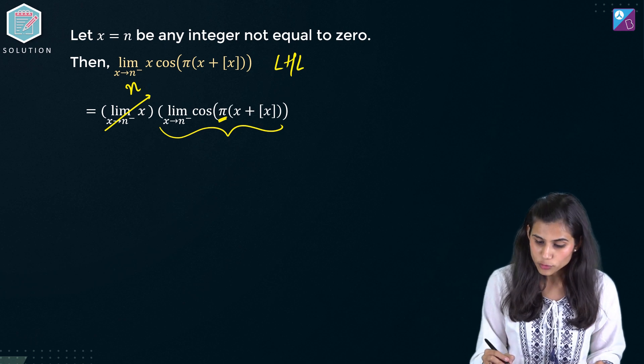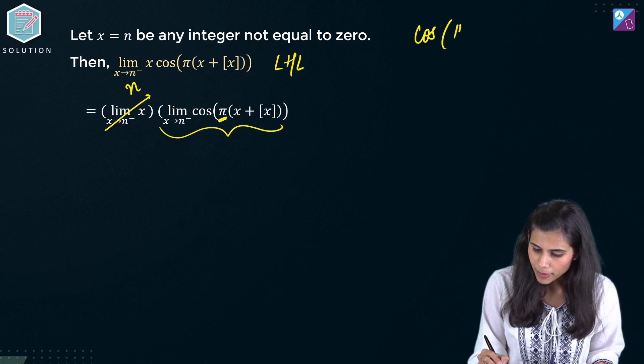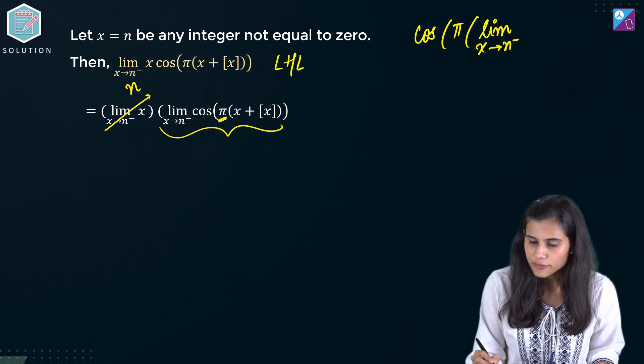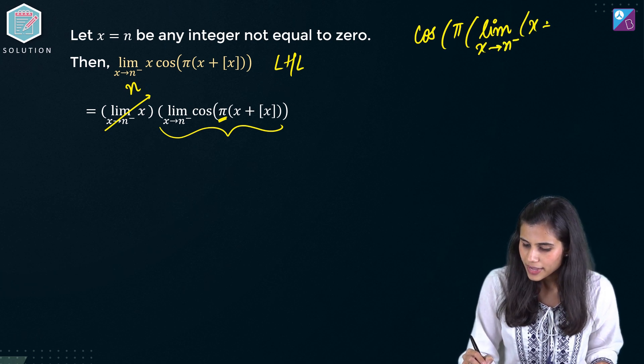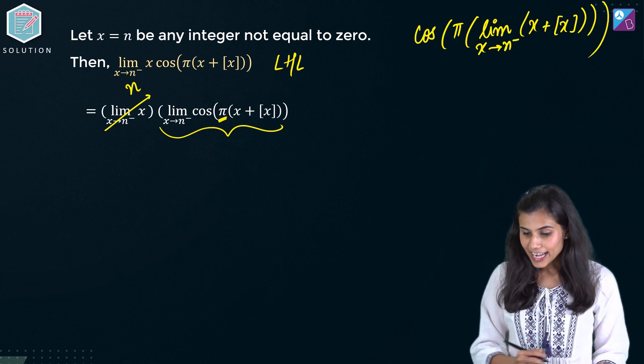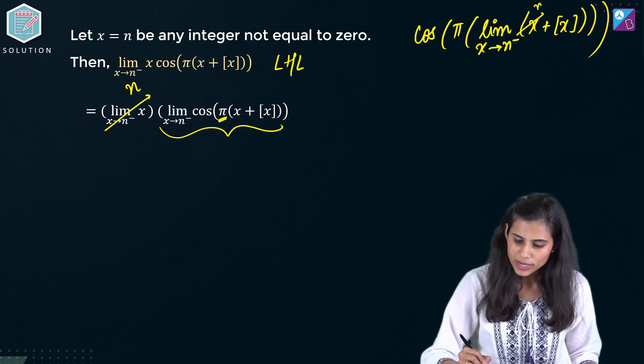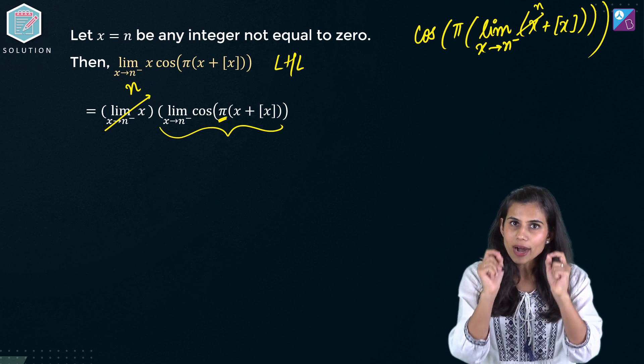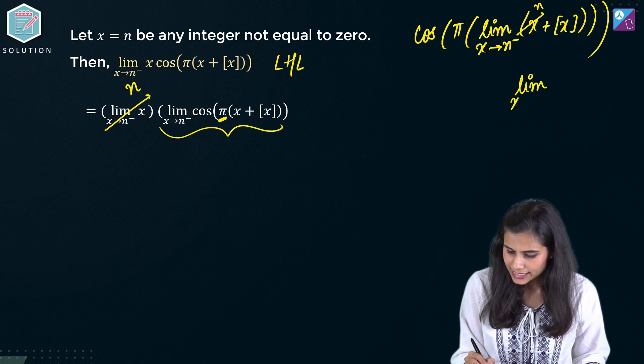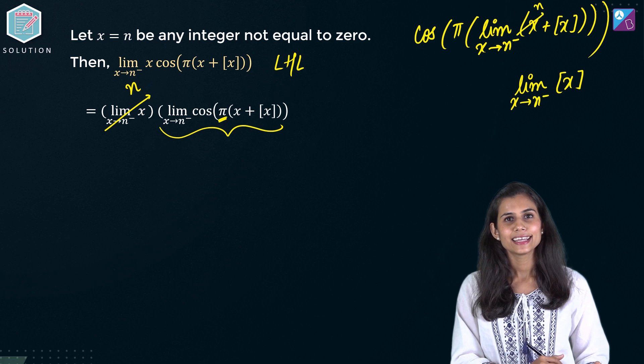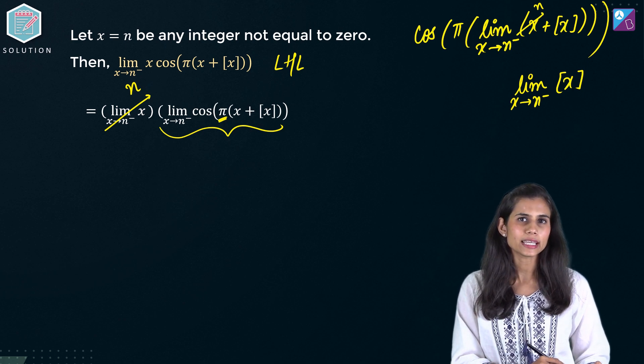So what you will be left with? Cos of pi of limit x tends to n from the negative of x plus gif of x. Now again x will approach to n. So you are left with just one computation. Limit x tends to n from the negative of gif of x. Tell me what will this come out to be?